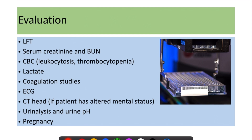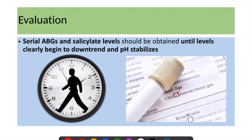ECG is sometimes important as patients can present with dysrhythmias. CT head is also important if the patient has altered mental status. Urinalysis should be performed, and all women of childbearing age should undergo pregnancy testing. Serial ABG and salicylate levels should be obtained until levels clearly begin to downtrend and pH stabilizes.